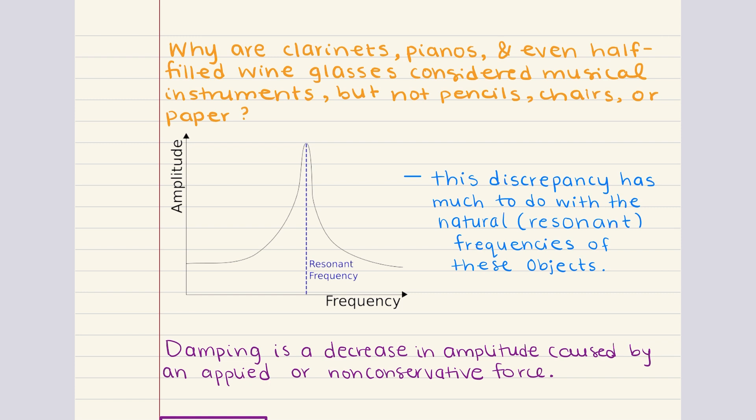And when a periodic force matches an object's natural frequency, the oscillation amplitude increases dramatically, and this effect is called resonance. Resonance explains why instruments or even a half-filled wine glass produces clear tones when played or struck. When the force, whether from plucking a string or tapping the glass, matches the object's natural frequency, the sound amplifies.